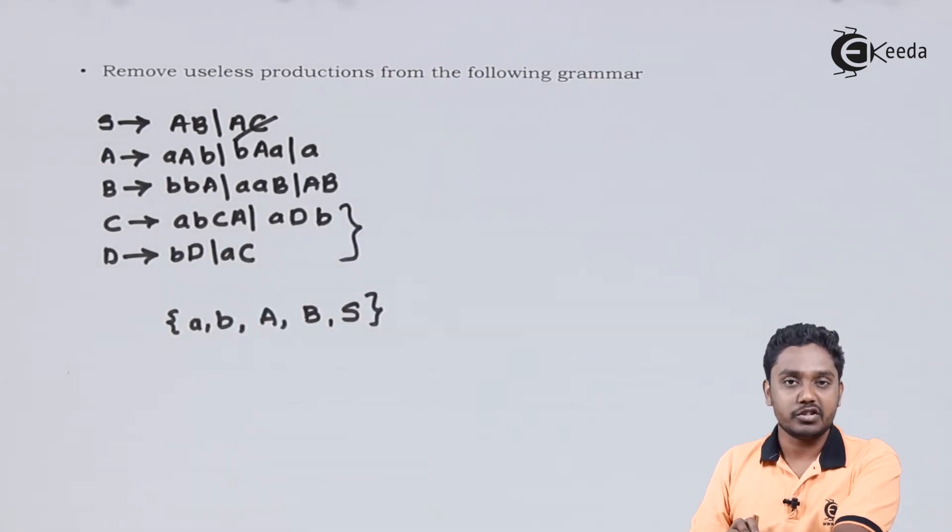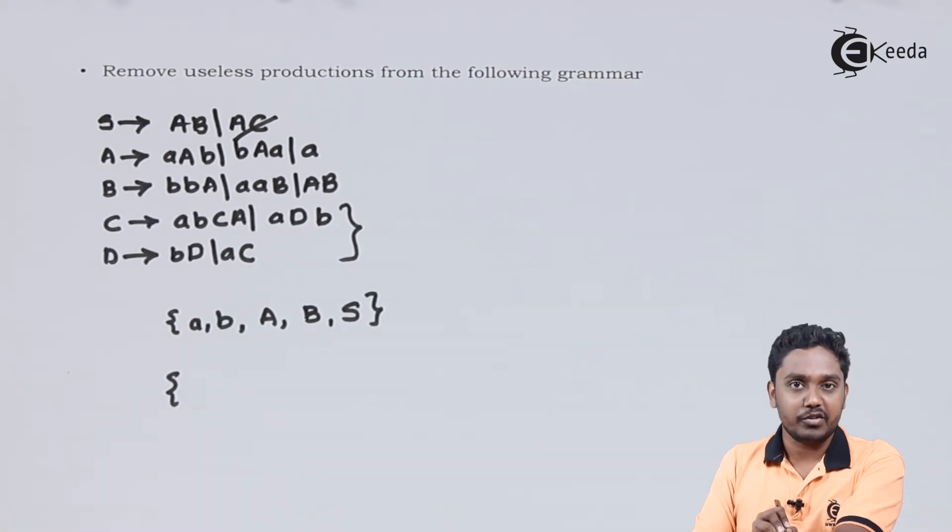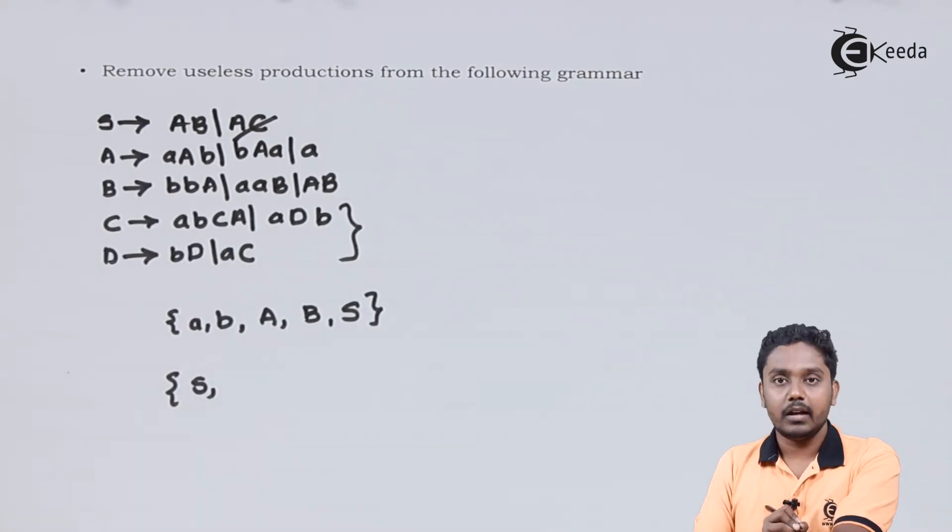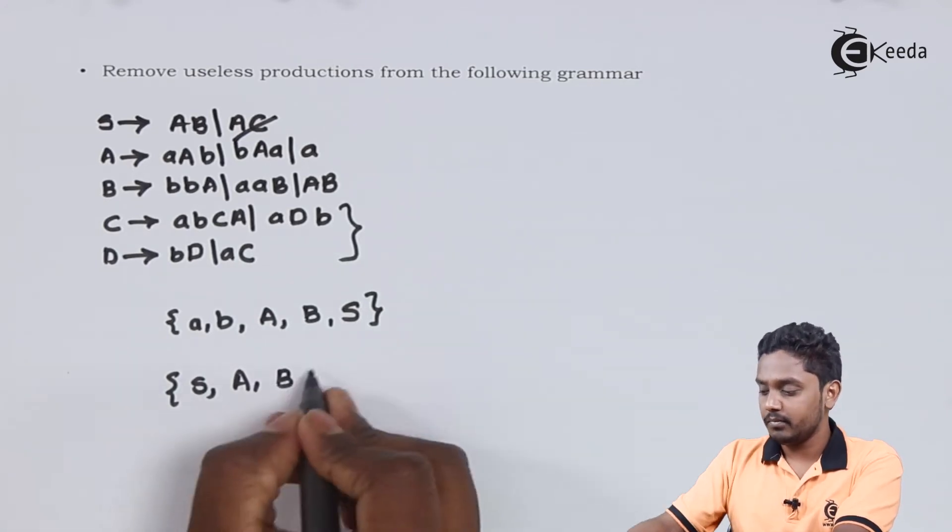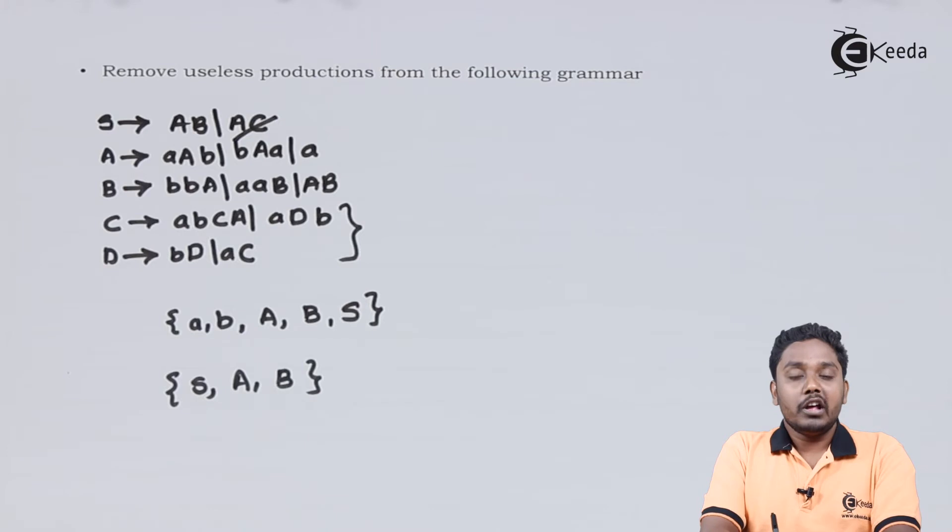Now, let us try to find out the reachable symbols. S is always reachable. S is reaching A and B. We have already eliminated C and D, and hence we can rewrite the grammar using new required productions.